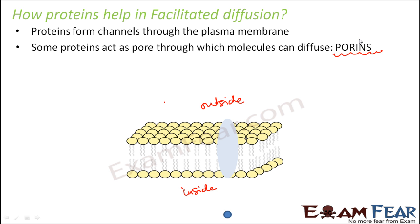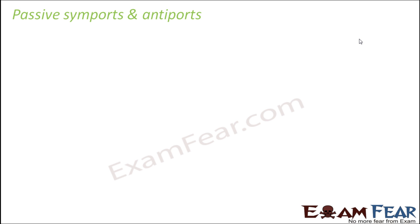The particle binds to the protein, the protein rotates and releases the particle to the inside of the cell. This is how proteins help in facilitated diffusion. So now both types of diffusion should be clear — simple diffusion and facilitated diffusion.